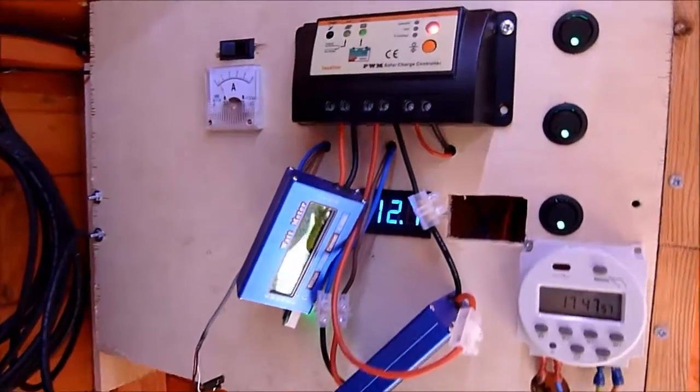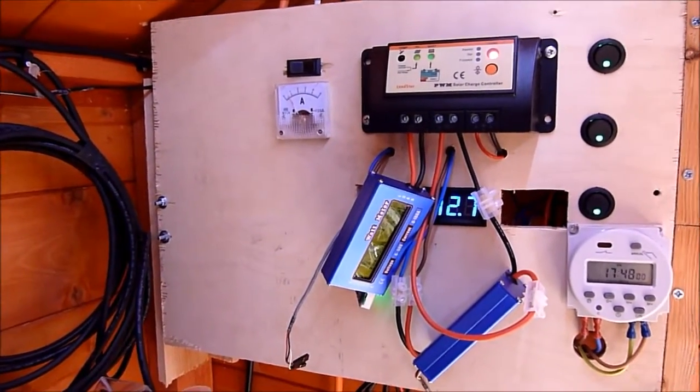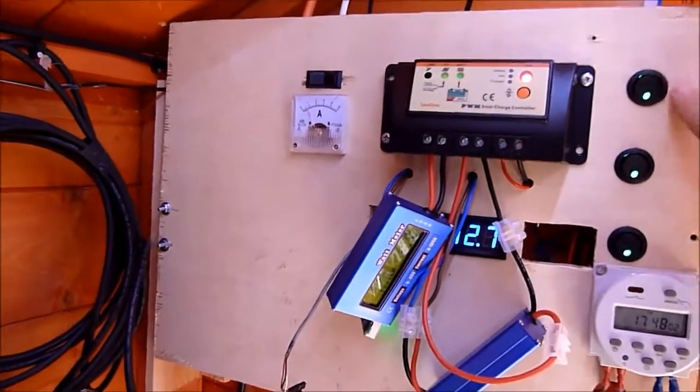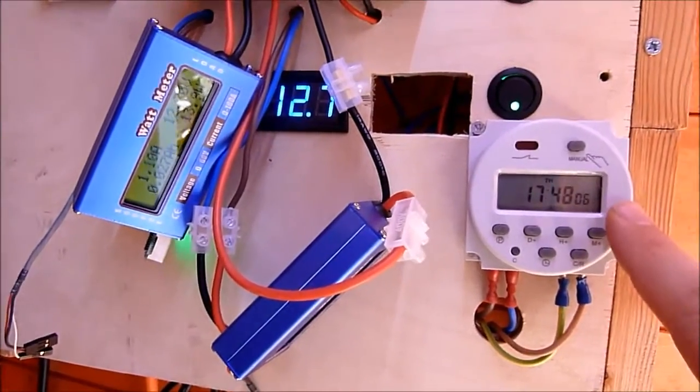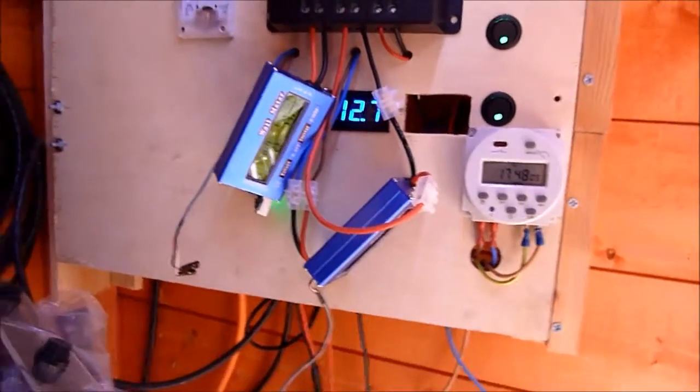And this is the solar control panel at the moment, various light switches, a 12V timer which does some lights on the outside of the shed.